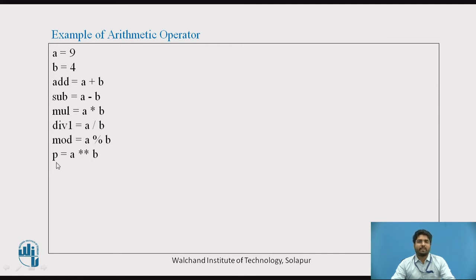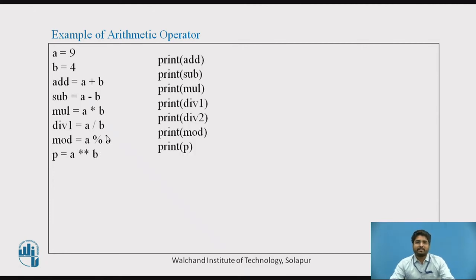Modulus is nothing but getting a remainder. When you divide 9 by 4, whatever remainder you get is shown in the percentage symbol. Then we use power: a double asterisk b, that is a raised to b.